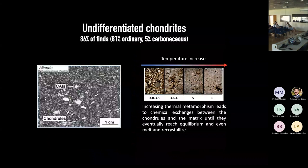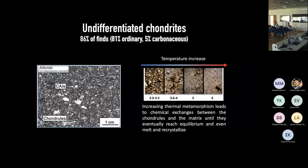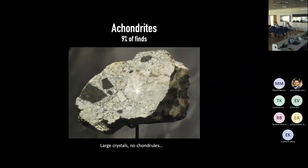If you take a chondrite and heat it in an oven, you'll see textural changes. In a very primitive chondrite you can see the chondrules and matrix clearly. As you increase the temperature, chemical exchanges happen between the chondrules and matrix until they reach chemical equilibrium. Heat them to very high temperature and they will eventually melt and recrystallize — at that point you get something that looks not like a chondrite but like an achondrite.